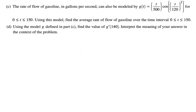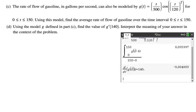So I copied part C again because part D is saying using the model for G defined in part C. We want to find the value of G prime of 140, calculator problem, and then interpret the meaning of your answer in the context of the problem. So it's a calculator problem. So we're just going to use the calculator to find that. I found the derivative with respect to T of G of T at 140, and I got negative 0.004909.